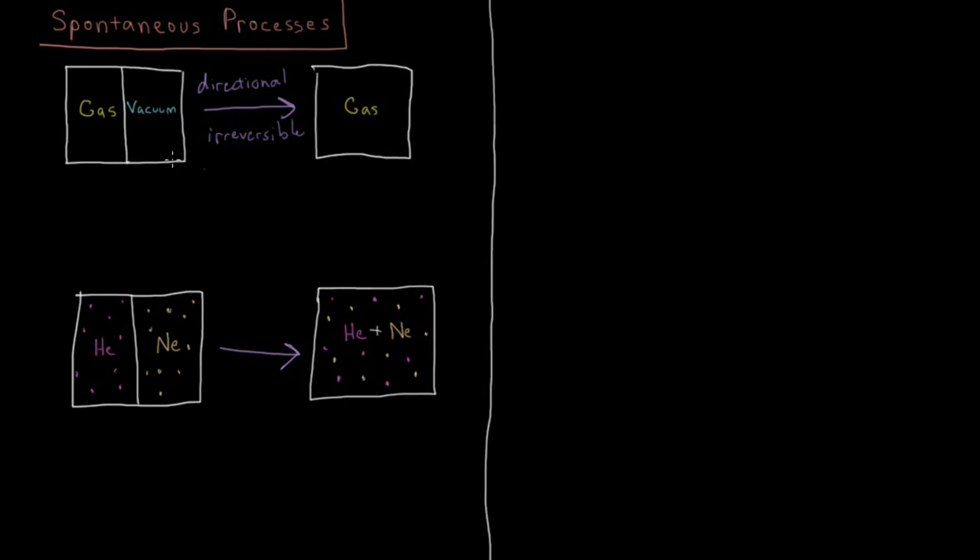So this type of process that I have listed up top here I would call the expansion of a gas into vacuum. And the type of process I have down here where we have two gases that are separate and then they mix together I would just call that gas mixing.